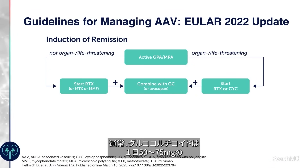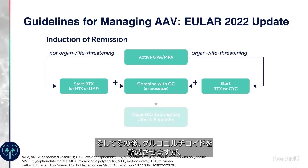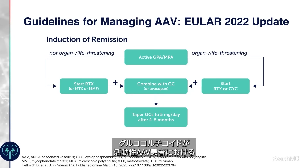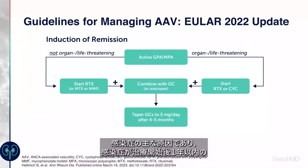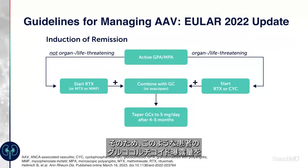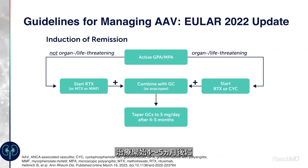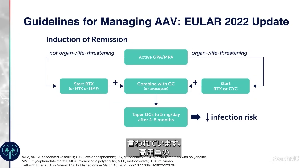Usually glucocorticoids are given at high doses of 50 to 75 milligrams per day as a starting dose, sometimes even higher. Subsequently the glucocorticoids are tapered. We have learned that glucocorticoids are the main driver of infections in patients with active AAV, and infections are the main cause of mortality within the first year of treatment. Attempts have been made to reduce glucocorticoid exposure, and current recommendations tell us to taper glucocorticoids to a target dose of 5 milligrams after 4 to 5 months of treatment.